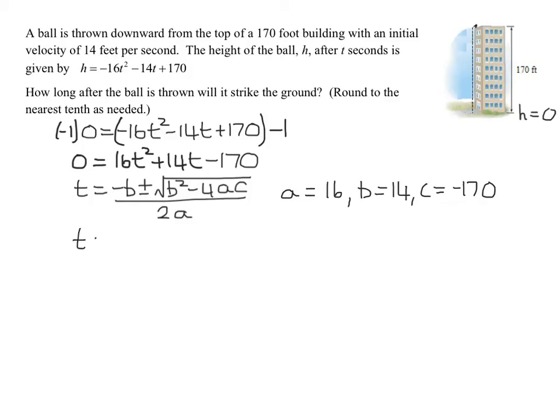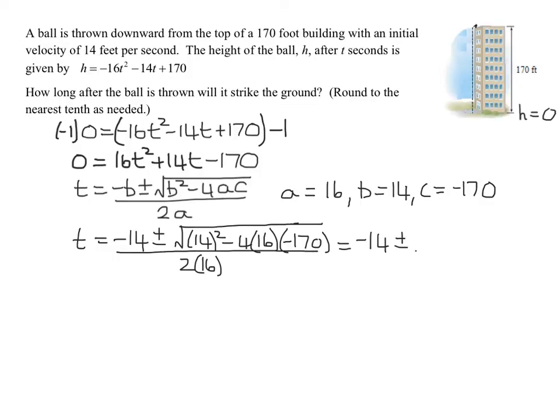So now it's plug and chug time. So t equals the opposite of 14, negative 14, plus or minus the square root of b squared, which is 14 squared, minus 4 times a is 16, and c is negative 170, all divided by 2 times a, which is 2 times 16. So that's going to give me negative 14 plus or minus the square root of 14 squared is 196, plus 4 times 16 times 170 is 10,880. You'll need your calculator for this problem, over 32.